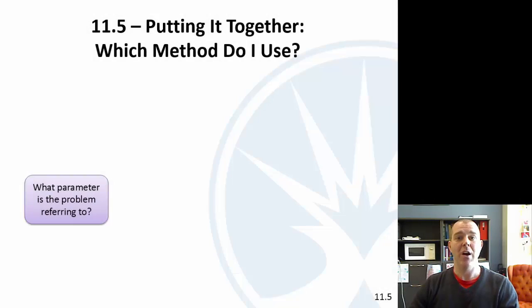Ok, last video from chapter 11. We're going to put it all together and try to decide what parameter the problem is referring to. So we've got a couple of options here. Is it a mean? We've got three options: mean, proportion, and standard deviation.